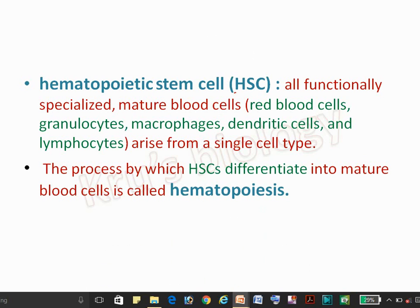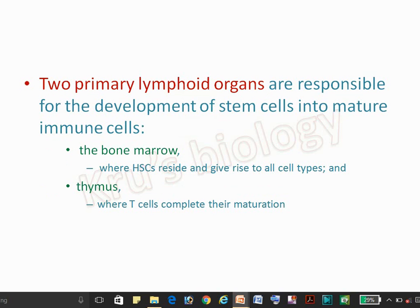What is the hematopoietic stem cell? It is the cell from which all the mature blood cells arise, like red blood cells, granulocytes, macrophages, dendritic cells, and lymphocytes. This process is called hematopoiesis. The two primary lymphoid organs are bone marrow and thymus, where the hematopoietic stem cells reside and give rise to all cell types.